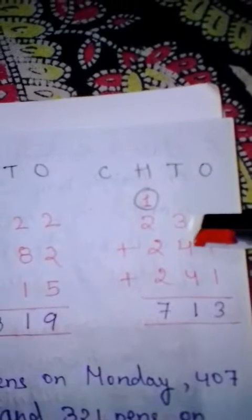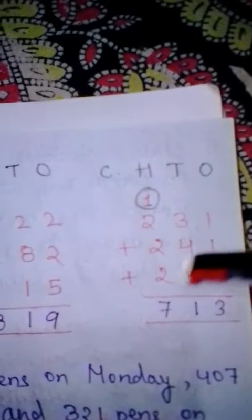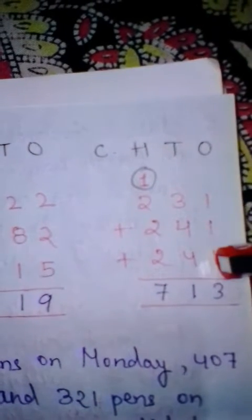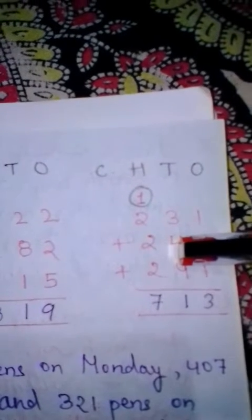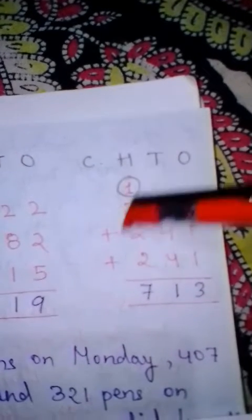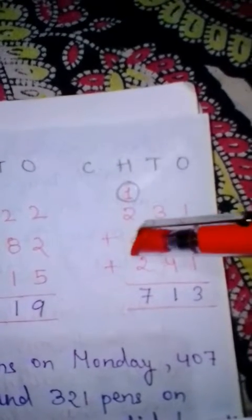Now part C: 231 plus 241 plus 241. So 1 plus 1 is 2, and 2 plus 1 is 3. Write 3. Now 3 plus 4 is 7, and 7 plus 4 is 11, so we write 1 and carry 1 to the hundreds place. Then 2 plus 2 is 4, and 4 plus 2 is 6, and carry 1 makes 7. So our answer is 713.